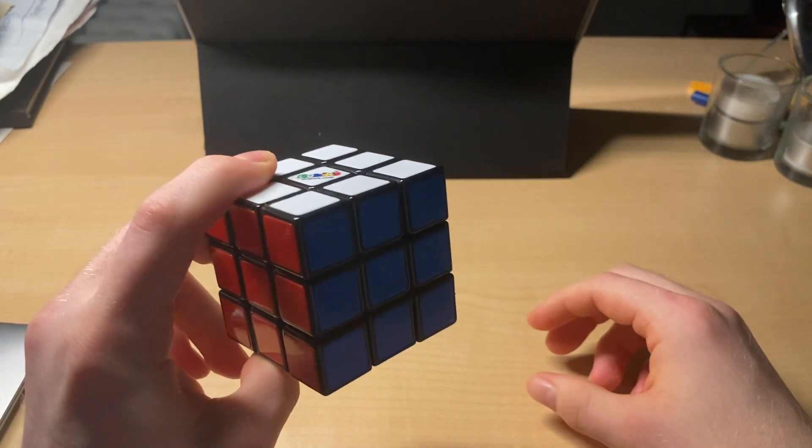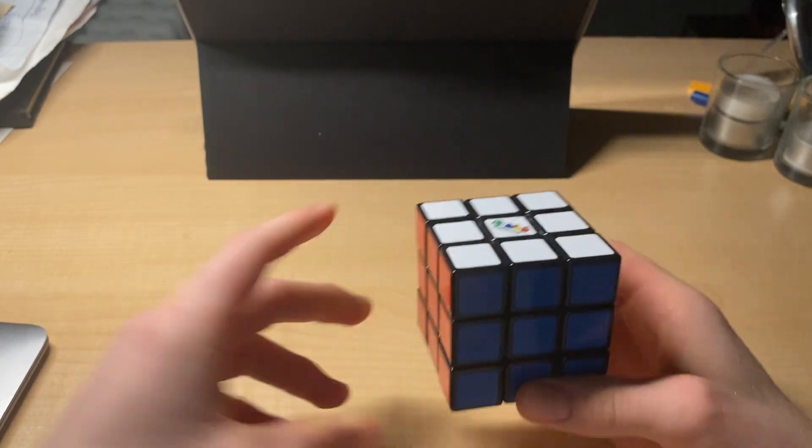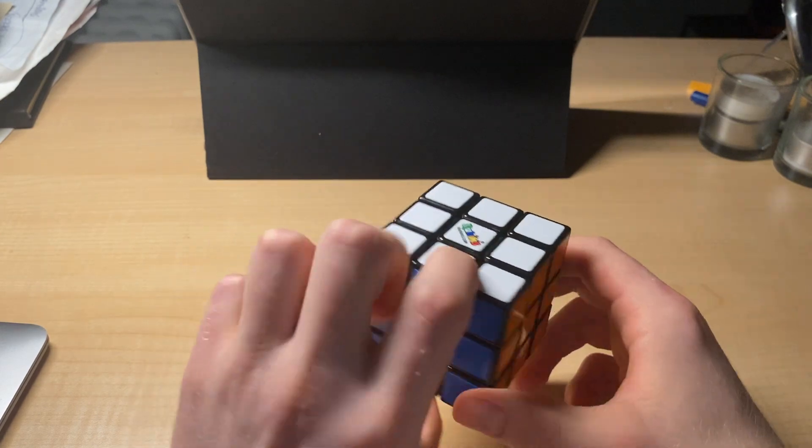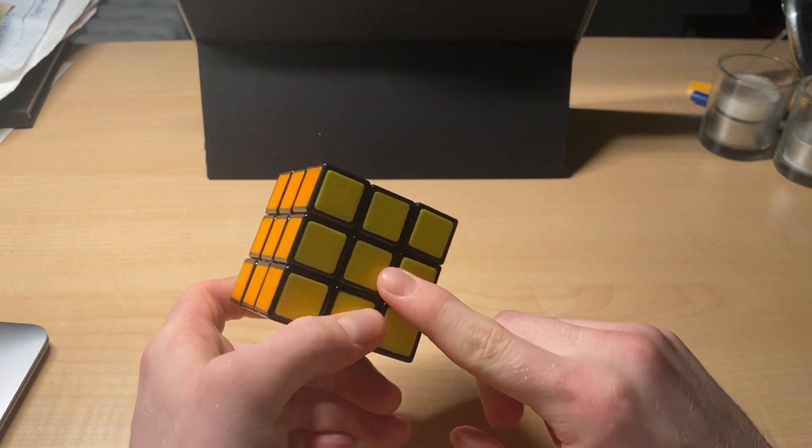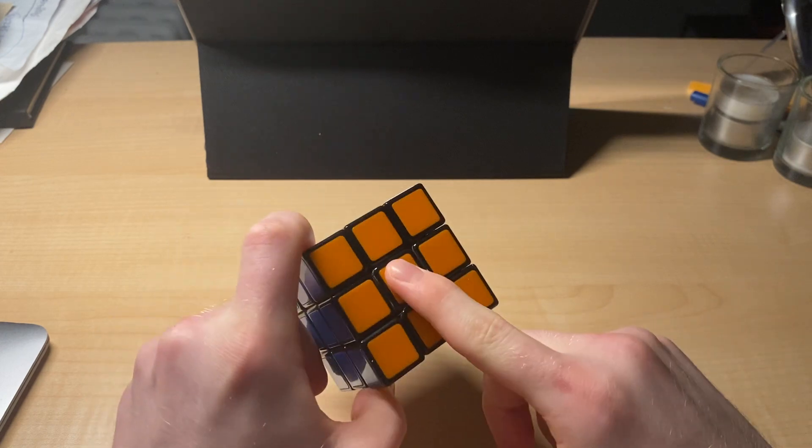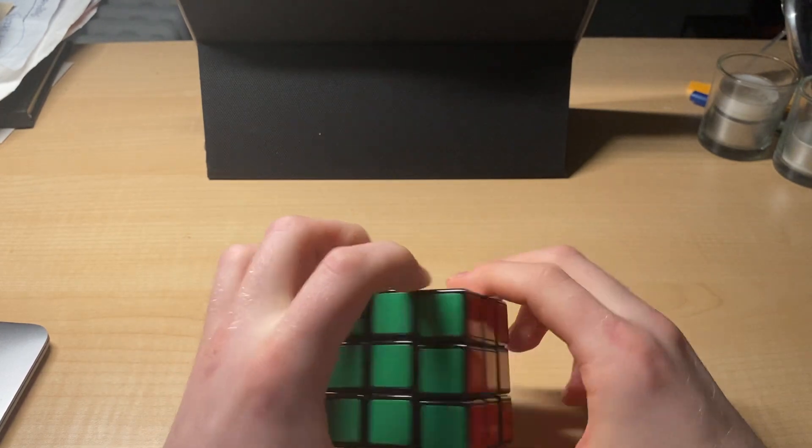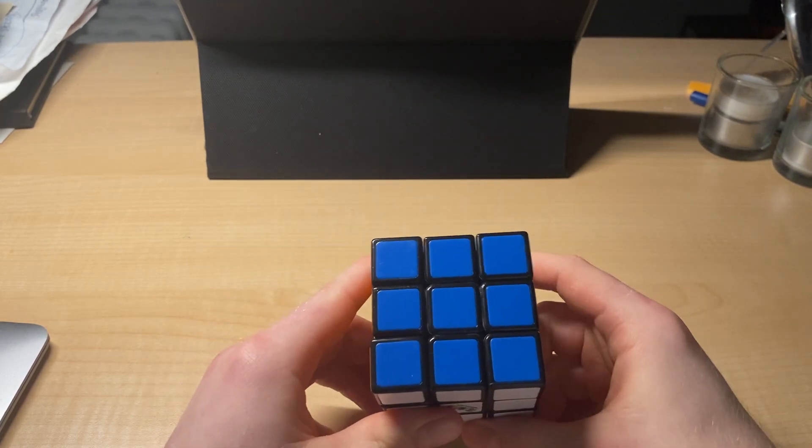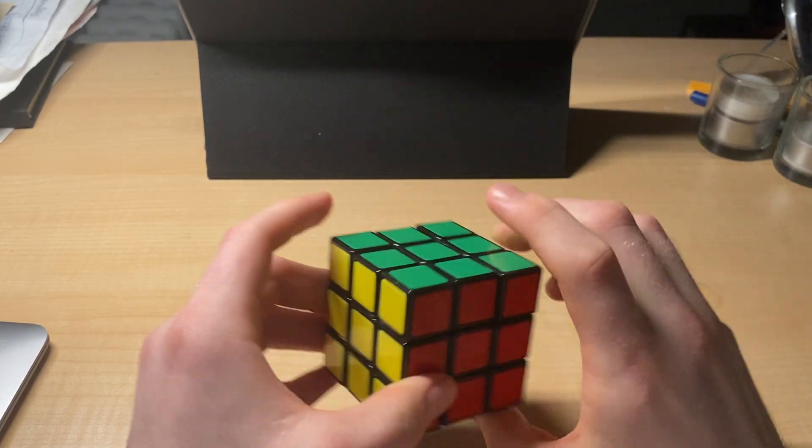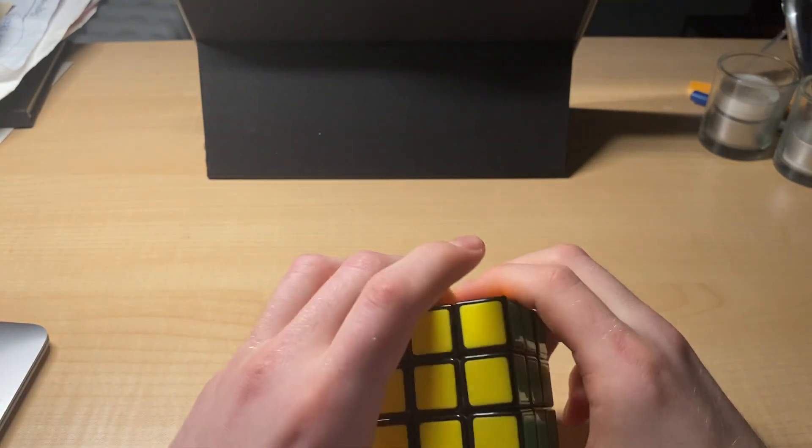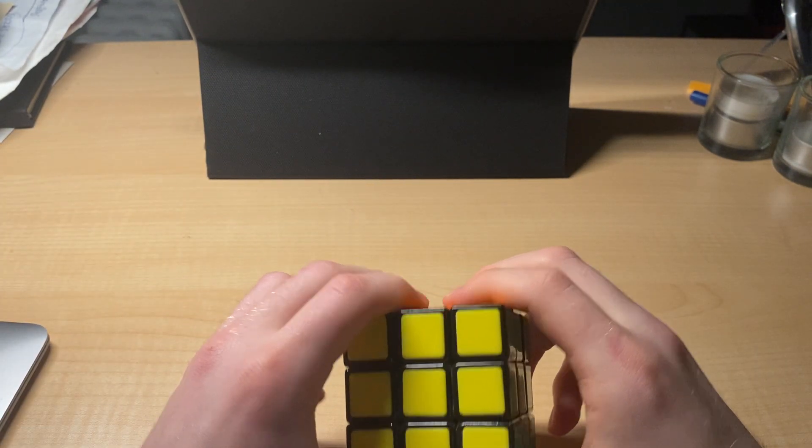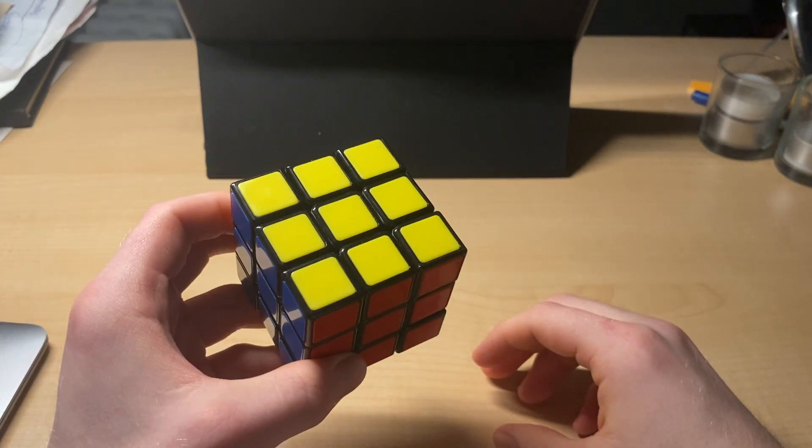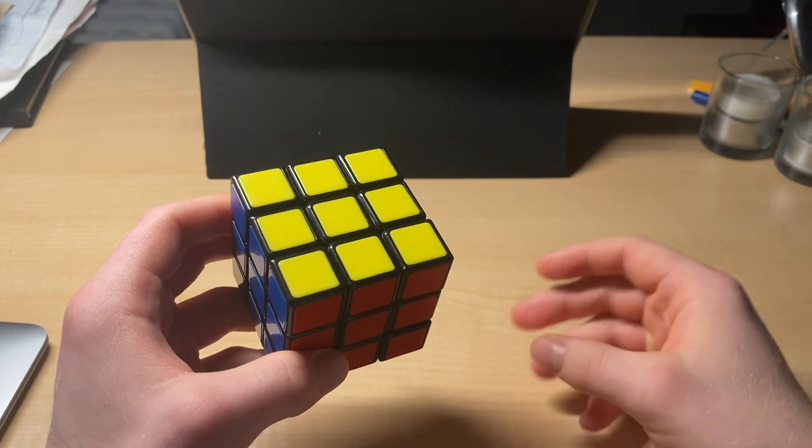There's a consistent detail: you will always have white opposite yellow, orange opposite red, and green opposite blue. That helps when you're trying to figure out where things need to go and where things are.